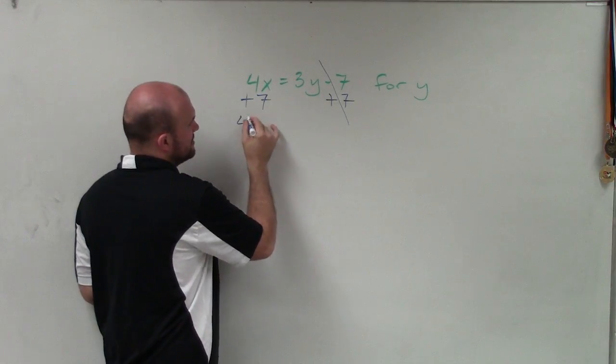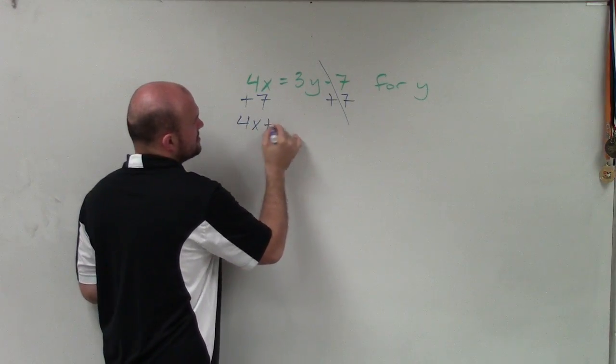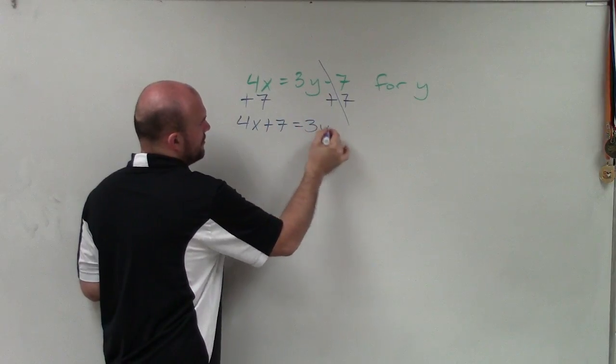4x plus 7 cannot be combined because they're not like terms. So I'll rewrite that as 4x plus 7 equals 3y.